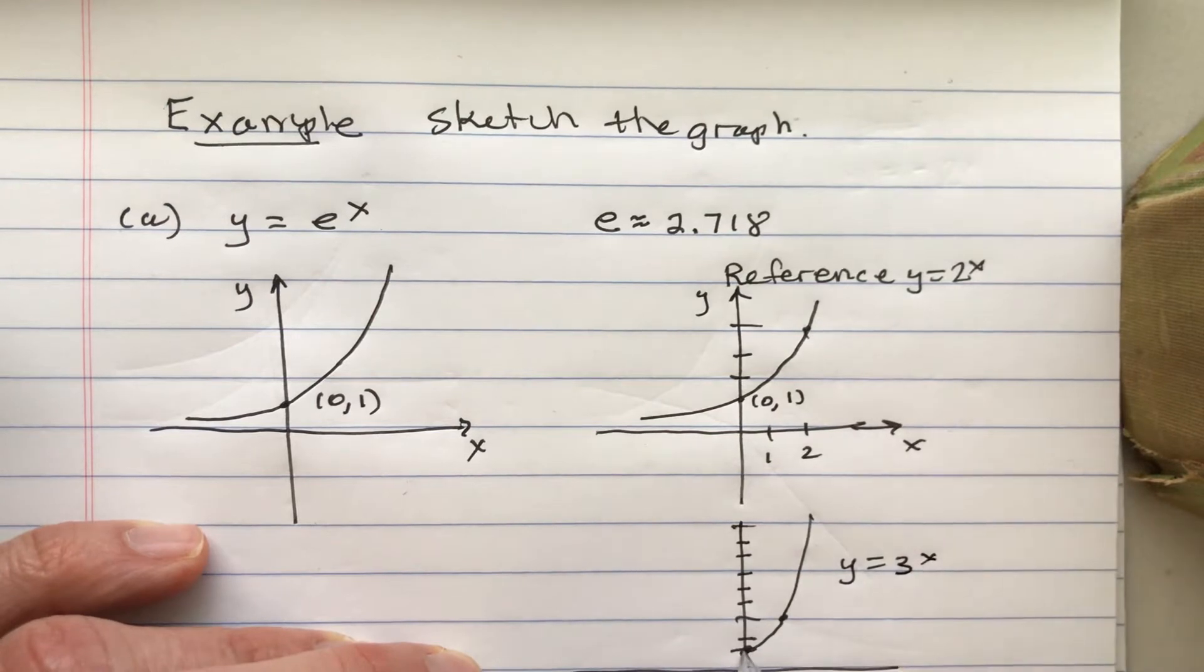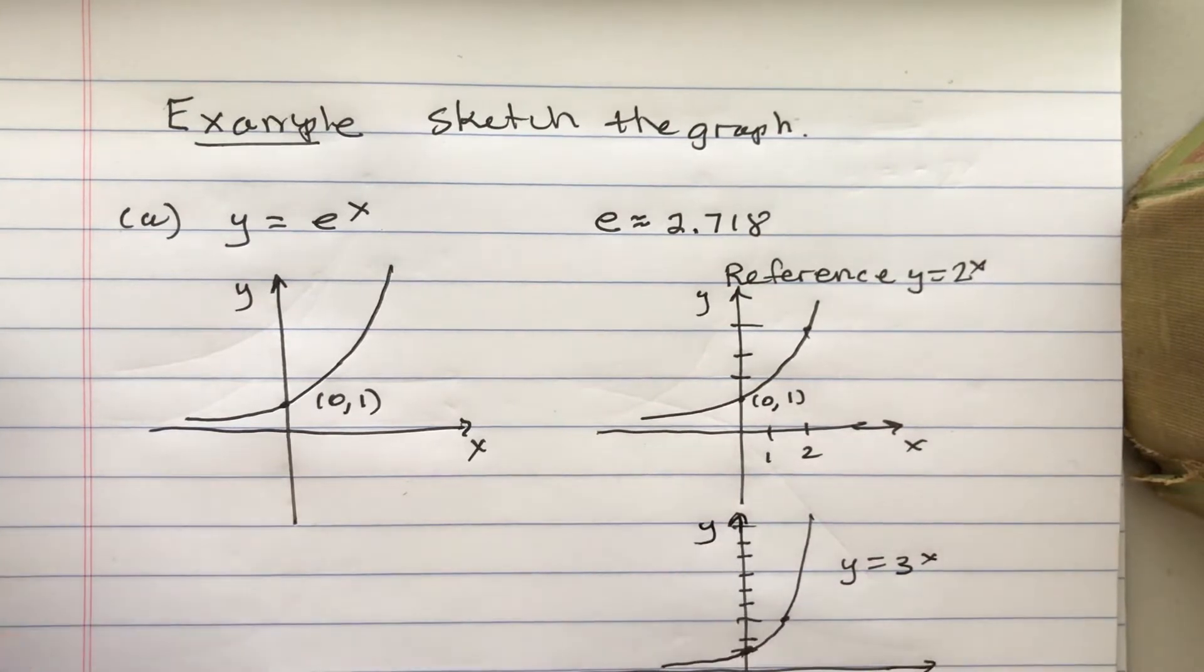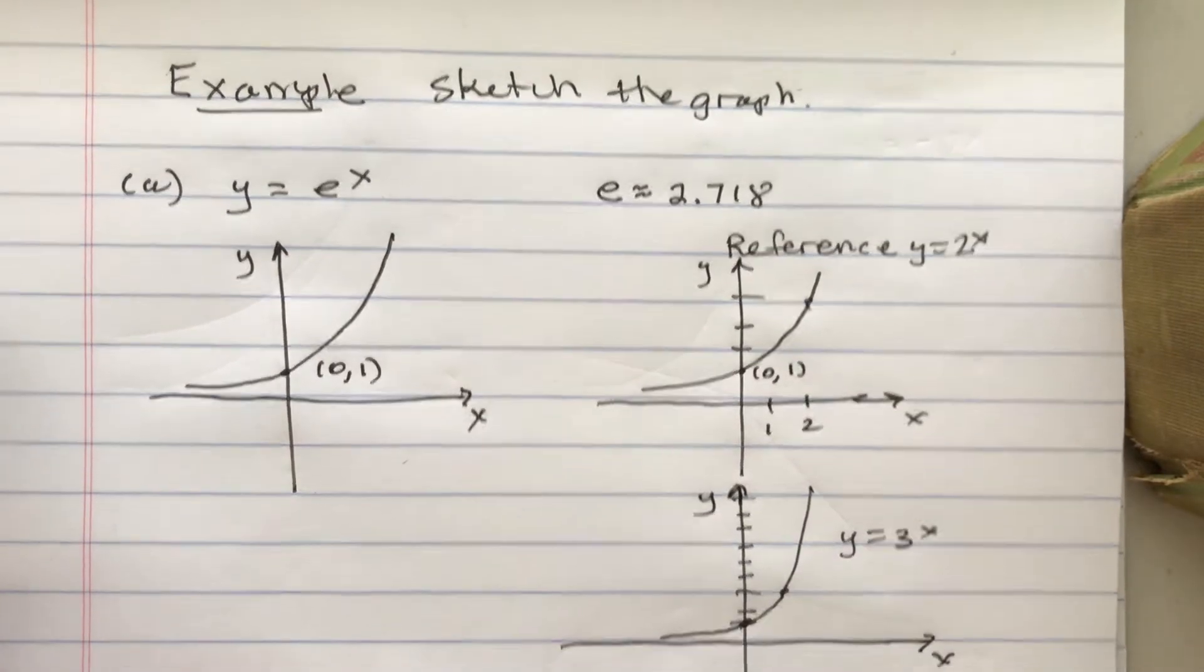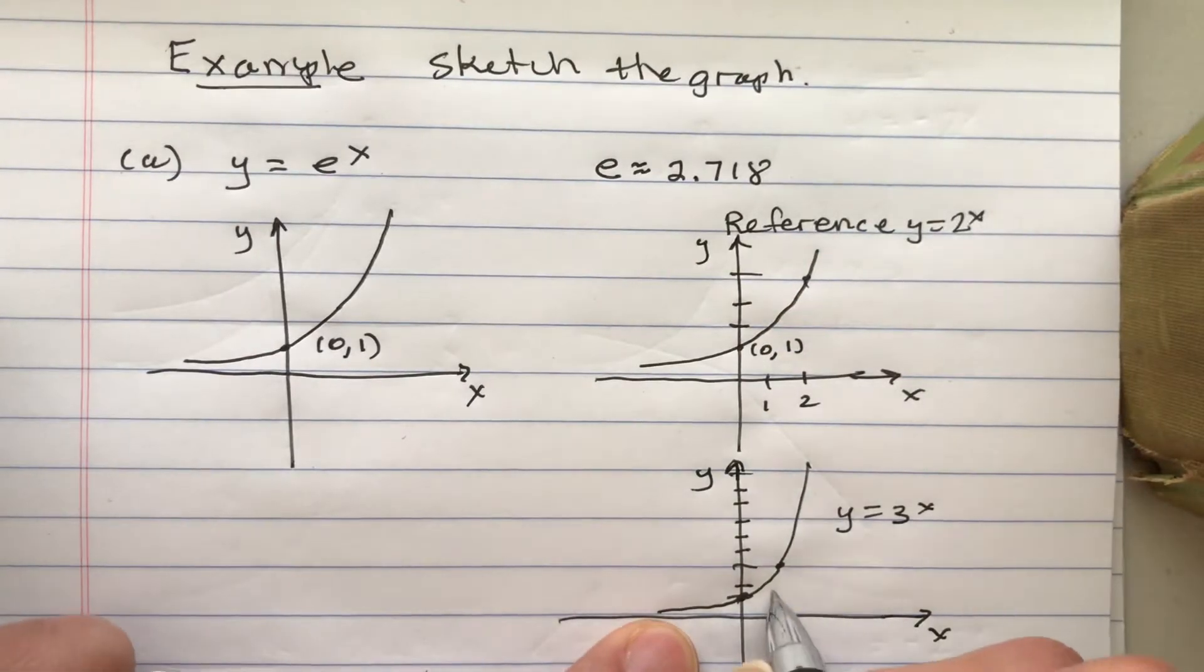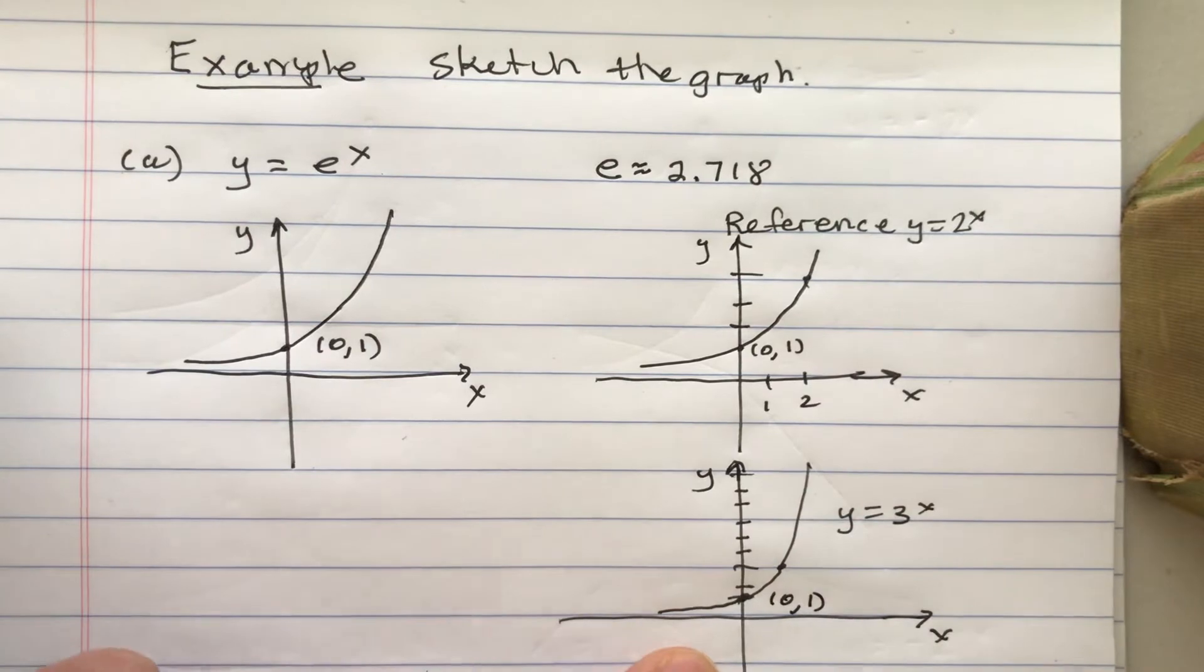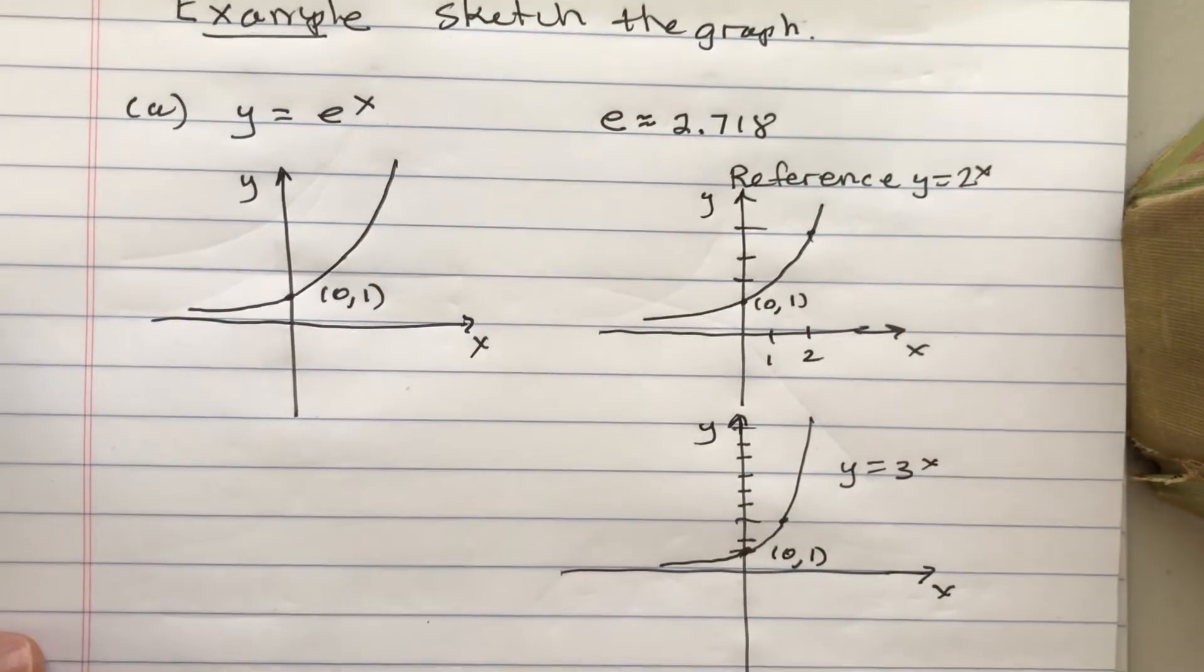Sorry, did I say y? Yeah, y equals 3 to the x power. So you can use those as a reference, and e is between 2 and 3. The thing to notice is that they have the same horizontal asymptote and they have the same y-intercept.